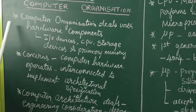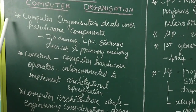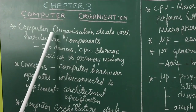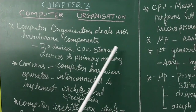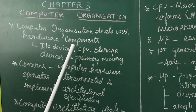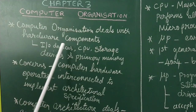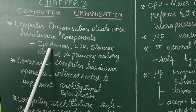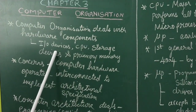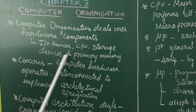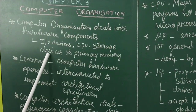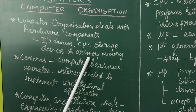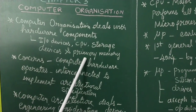Introduction to computer organization: computer organization deals with the hardware components. The hardware components include input-output devices, CPU, storage devices — that is secondary storage devices and primary memory, that is RAM and ROM.